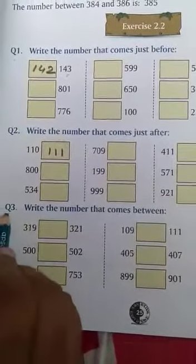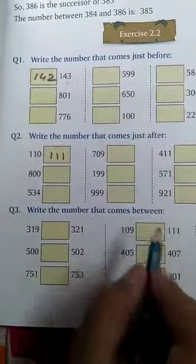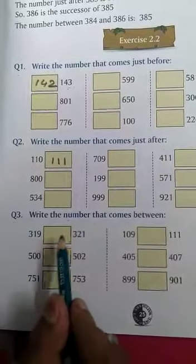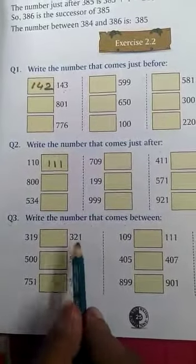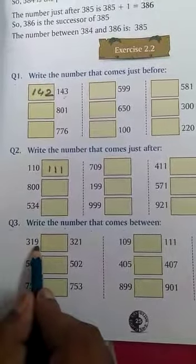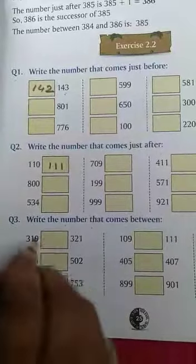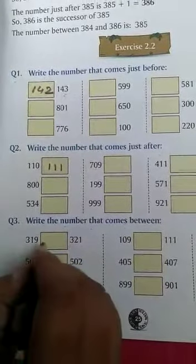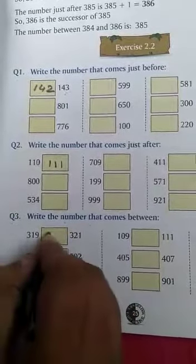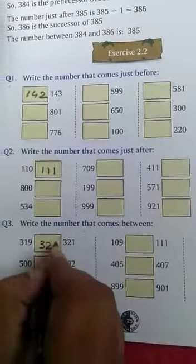Okay now question number 3 is write the number that comes between, means we have to write the number between 319 and 321. So after 319, what is the answer? After 19 comes 20, 320. After that 321. So 320 is the answer.